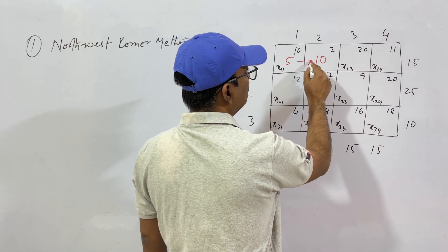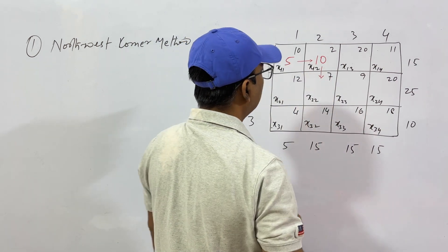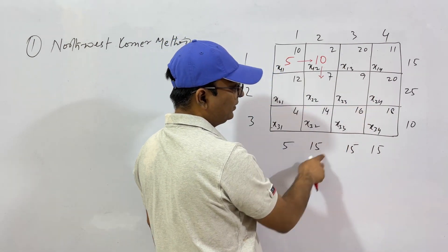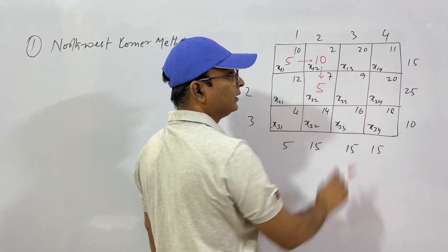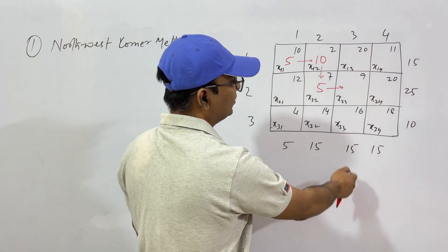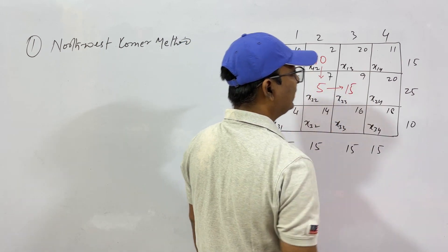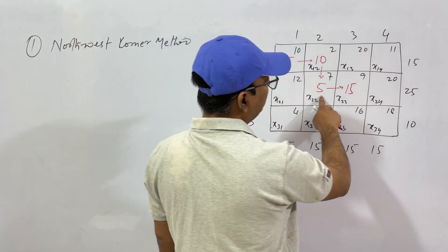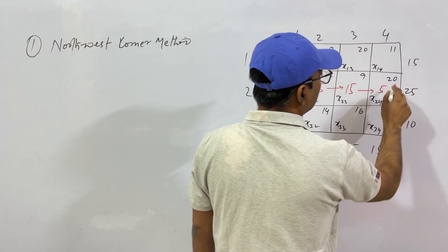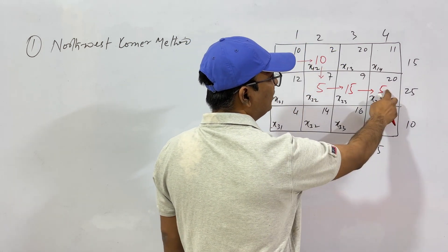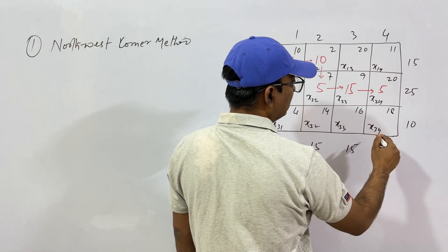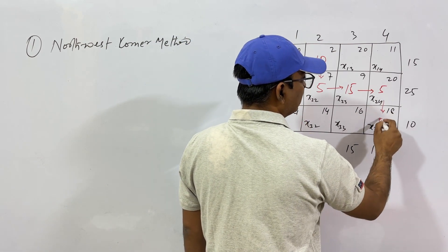Come down to the second row. The second unit can produce 25 units. Demand left for the second column is 5 (total was 15, we gave 10), so allocate 5. Then move right: the demand is 15 and supply is 25, so allocate 15. Still 5 items are left from this unit, so give 5 to the next column. Third source produces 10 items — what is lacking is 10 units, so allocate 10.